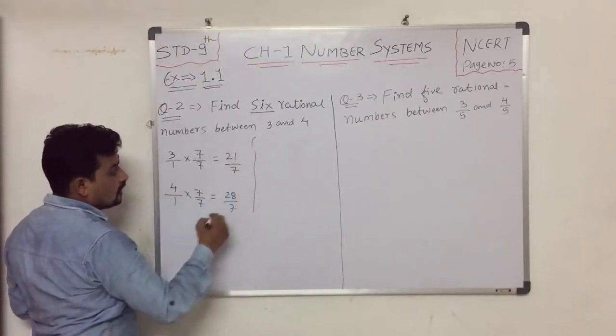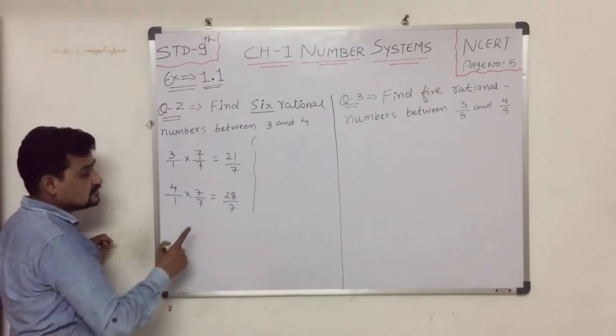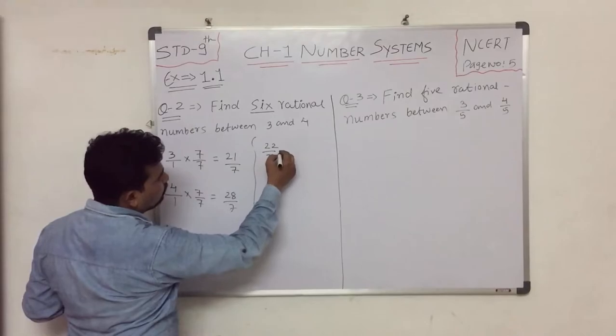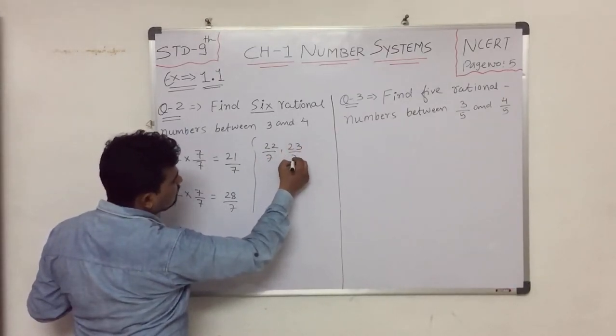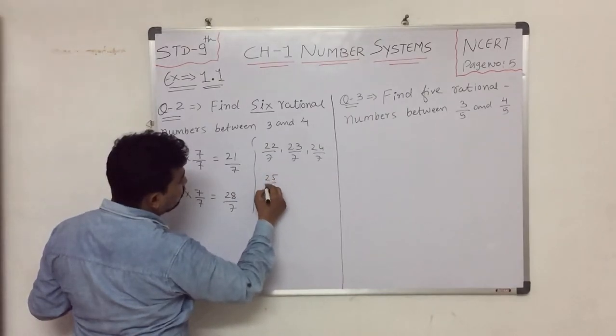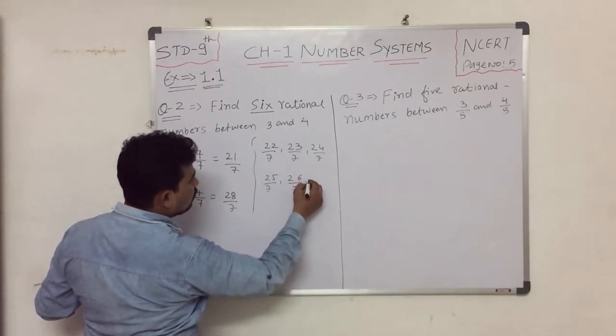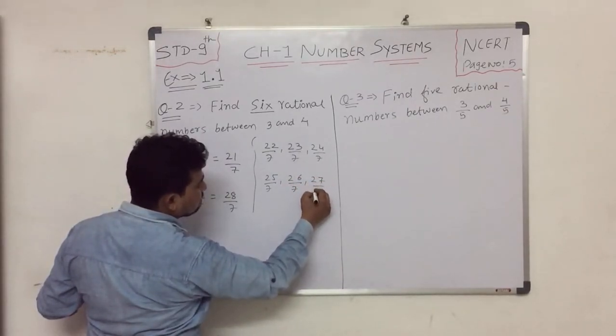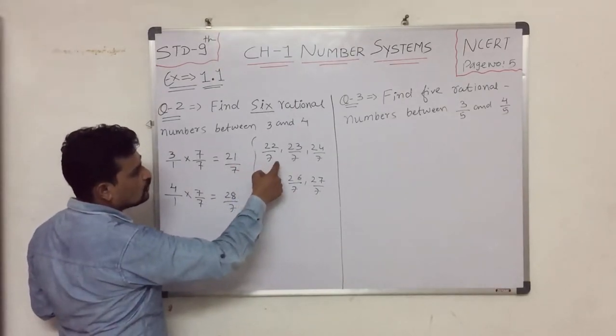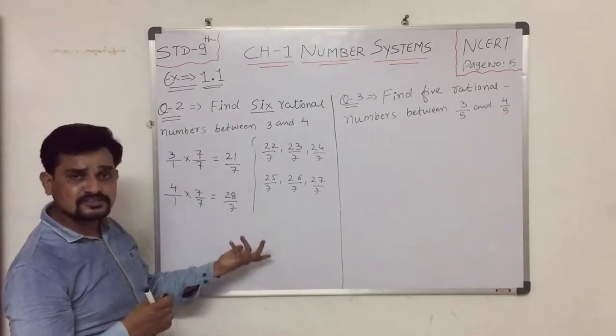Between 21/7 and 28/7, we can write: 22/7, 23/7, 24/7, 25/7, 26/7, and 27/7. So these are the 6 rational numbers - one, two, three, four, five, six. These are the rational numbers between 3 and 4.